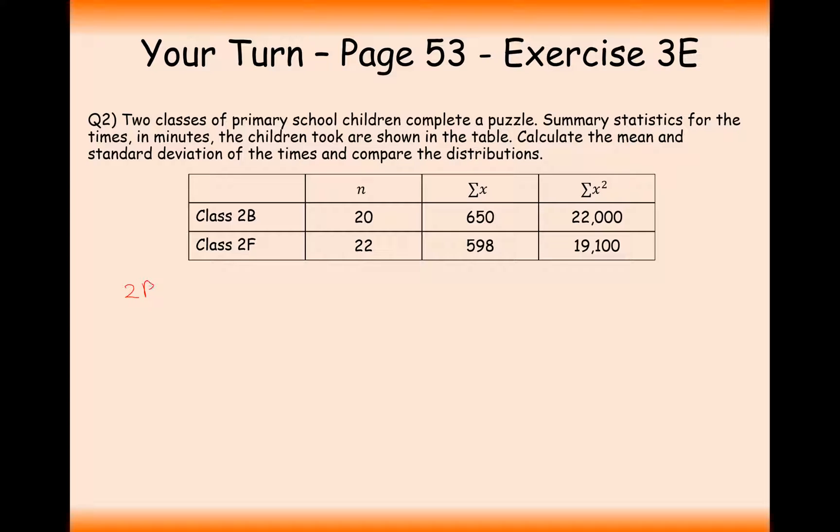So let's work with class 2B first. Let's work out its mean. So in this case here, it's going to be the sum of x divided by n. So that's 650 divided by 20, which gives us 32.5. And this is measured in minutes.